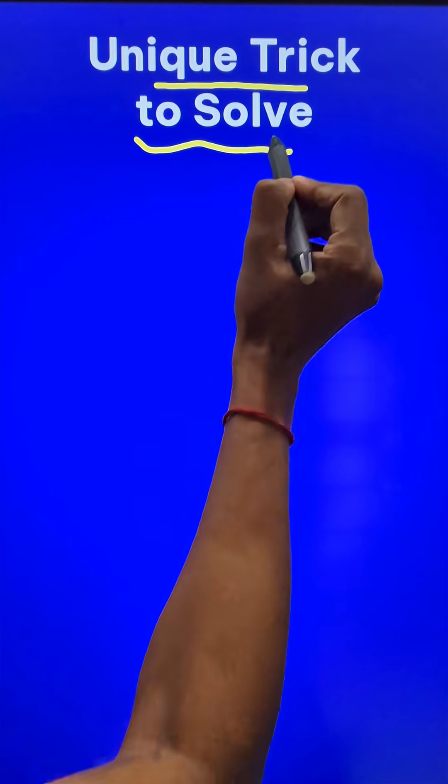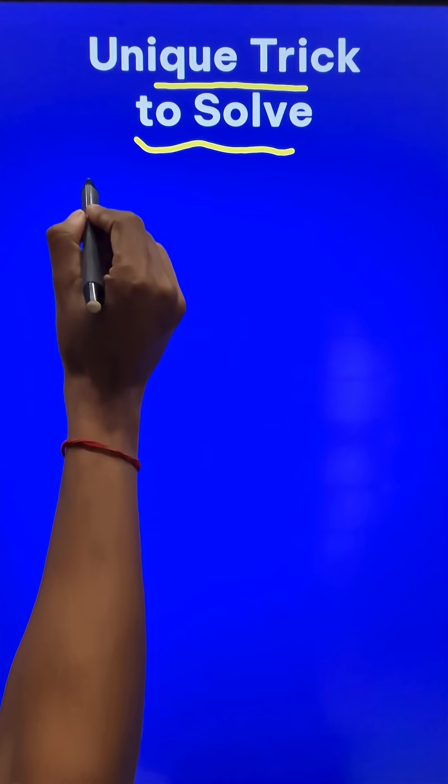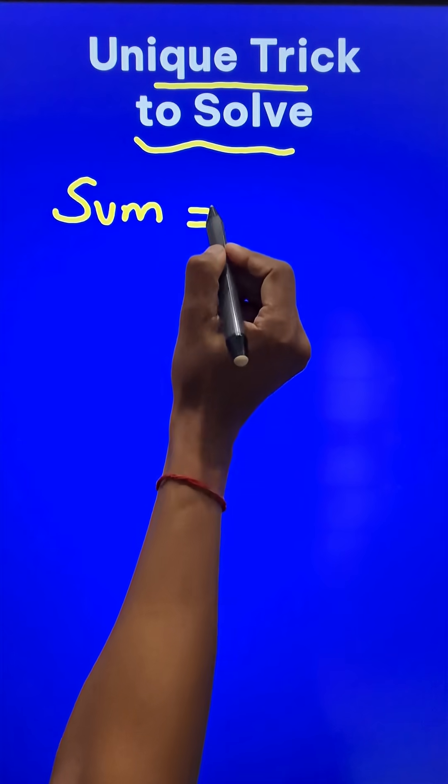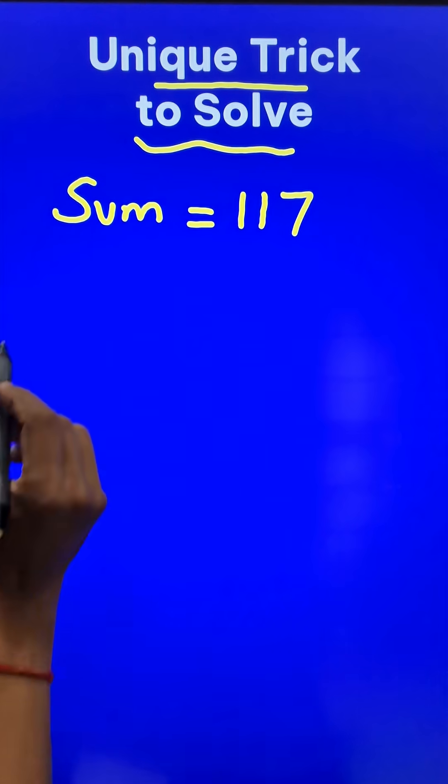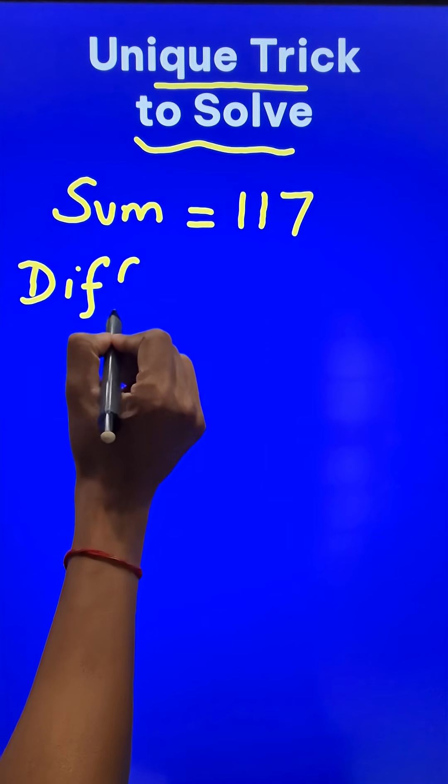Here is a unique trick to solve an important quant problem. Suppose the sum of two numbers is given to you as 117 and the difference between the same two numbers